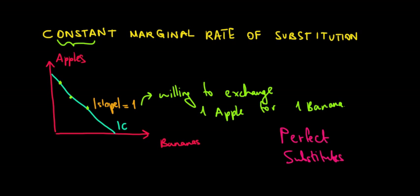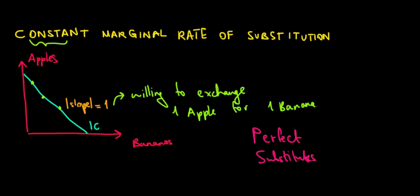We're willing to exchange at the same rate, which in this case is 1 for 1. Sometimes it could be 2 for 1 or 3 for 1, depends on the question. The idea is that the exchange rate is constant. No matter how much we have, we always are able to find a combination, a substitution between one good and the other. And in this case, the perfect substitutes are having the slope of 1.